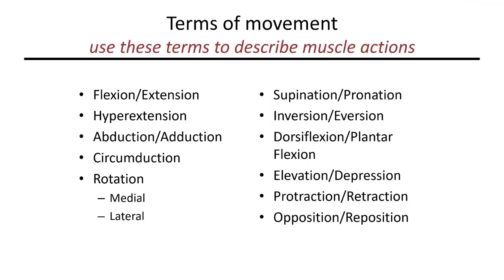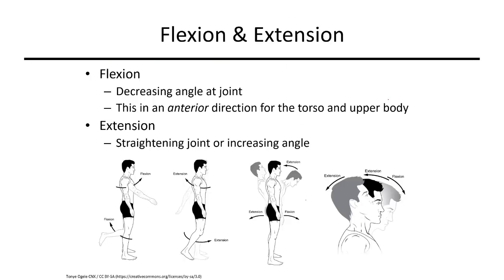This is a list of movements that occur at synovial joints. Flexion and extension are about the angle at a joint: closing the angle is flexion and opening it is extension. For the elbow or knee, bending is flexion and straightening is extension. For the arm at the shoulder, leg at the hip, or the torso itself, motion forward is flexion — tilting your chin down, bending forward at the waist, or swinging your straight leg or arm forward. For extension you're moving back — moving your torso back or your straight leg or arm behind you.